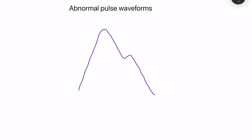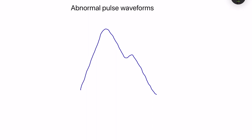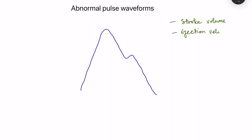The character of the pulse waveform depends on several factors: stroke volume, which determines the peak of the pulse; ejection velocity; vascular compliance — less compliance produces a more spiked waveform as seen in peripheral arteries; and systemic vascular resistance, that is peripheral resistance. These factors influence the shape of the pulse waveform.